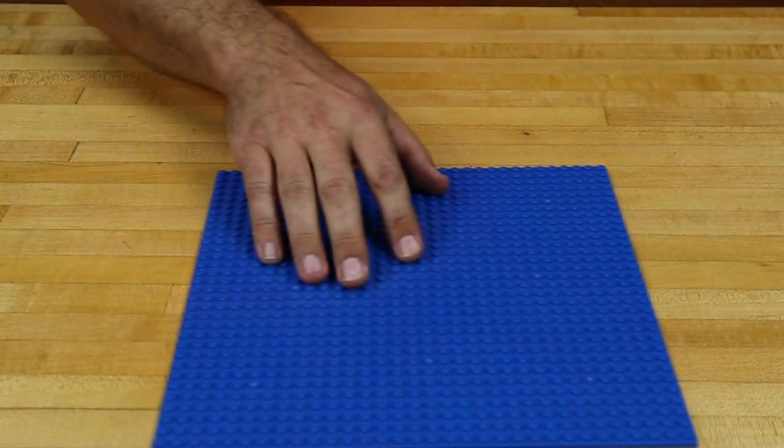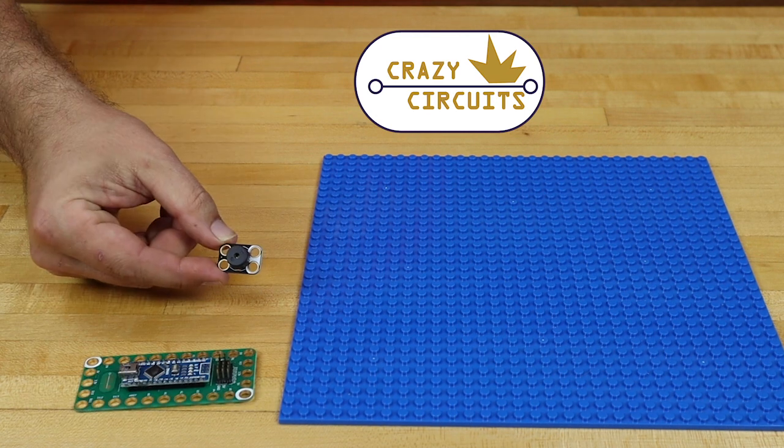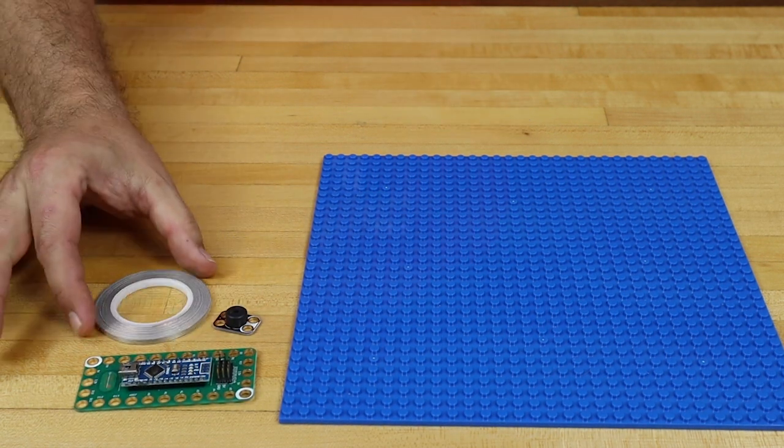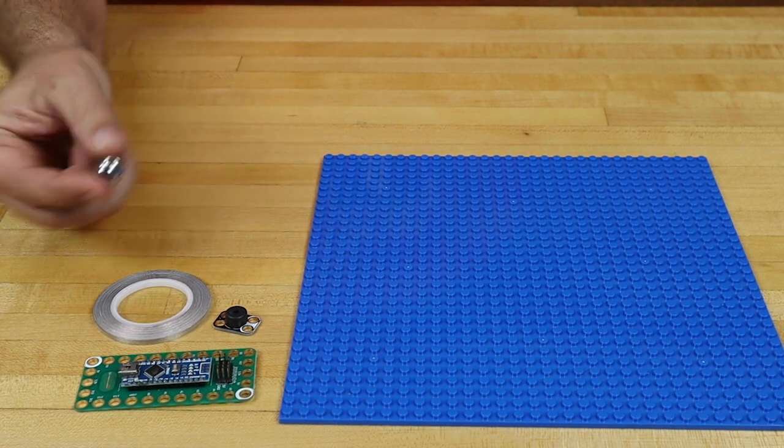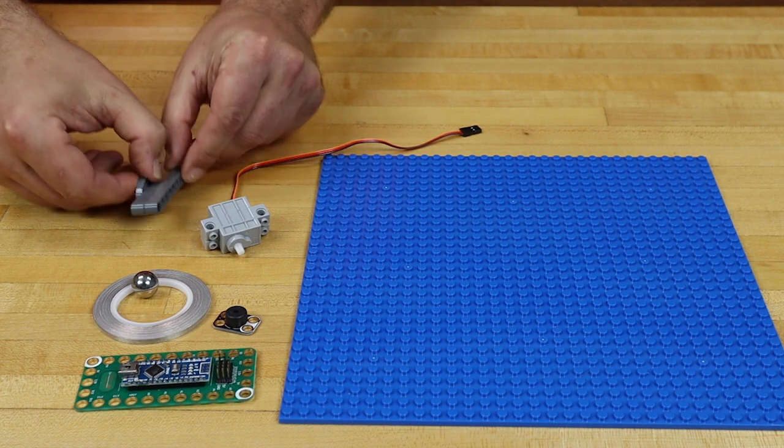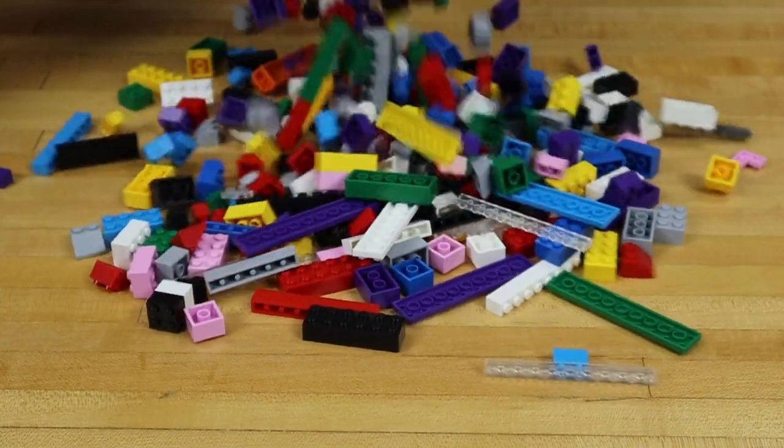For this project we'll need a large LEGO plate, a Crazy Circuits robotics board, a Crazy Circuits piezo speaker, Maker Tape nylon conductive tape, a ball bearing, a servo, LEGO parts to make a gate, and of course, plenty of LEGOs.